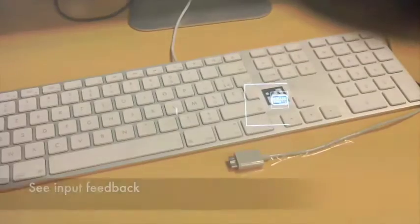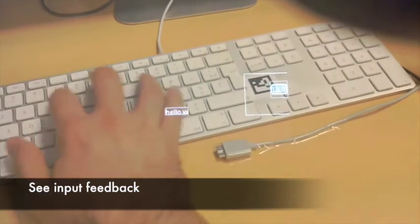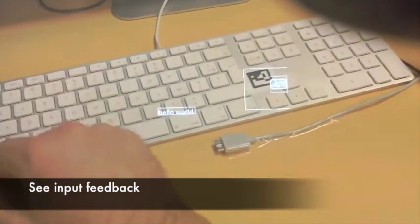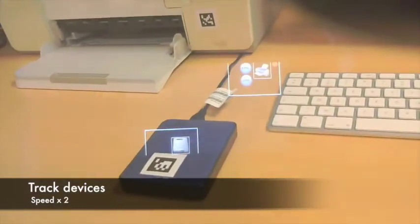John benefits from other Glui interactions in his daily work. John can see text appear over the keyboard while he types. He can track all the devices in his office and see their status, such as remaining battery or ink level.